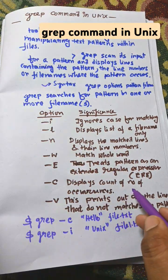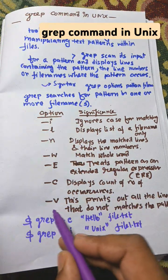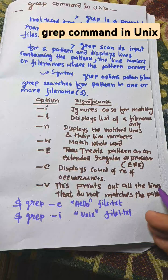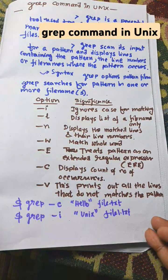Hyphen c displays the count of occurrences. Hyphen v prints out all the lines that do not match the pattern.